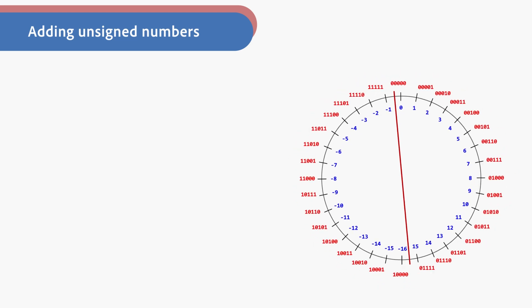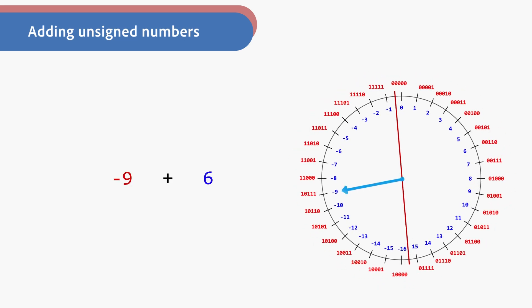Suppose we are adding negative 9 and 6. These two signed numbers are represented in two's complement in computers.